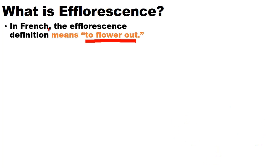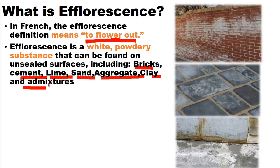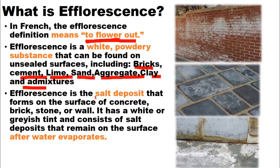First of all, what is efflorescence? In French, the definition of efflorescence means to flower out. Efflorescence is a white powdery substance that can be found on unsealed surfaces, including bricks, cement, lime, sand, aggregate, clay, and admixtures. As you can see over here, there is efflorescence on the bricks, on tiles, and on concrete.